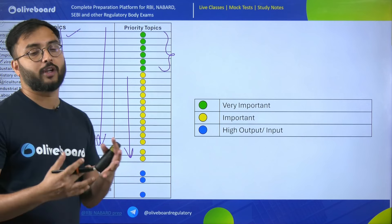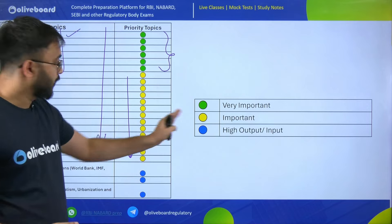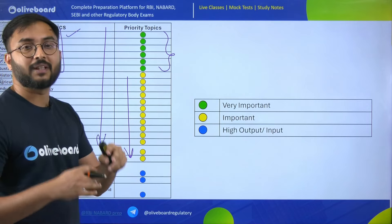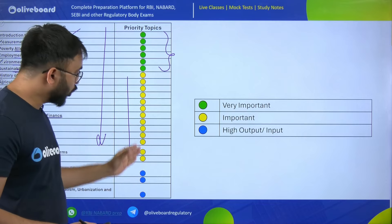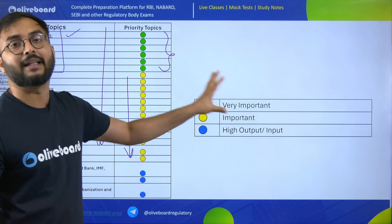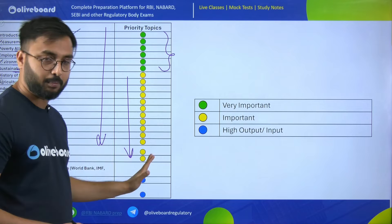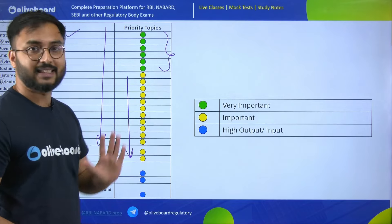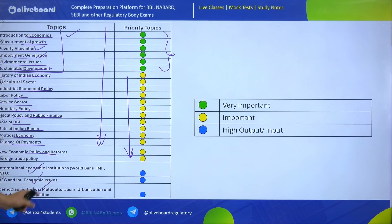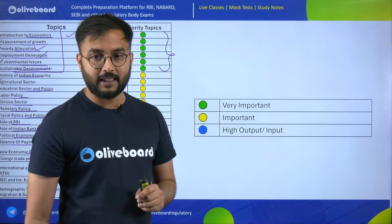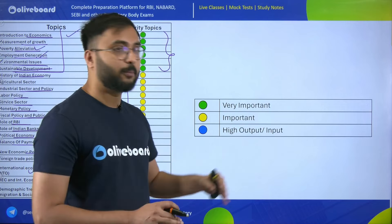So you will understand what the real priority is: prepare green first, then yellow and blue — prepare them very well. If you want to prepare all ESI topics in maybe 25 to 35 or 40 days, the first 25 days prepare all first and second priority topics — from introduction to economy through foreign trade and policy. In the last 10 days, prepare your high output-to-input topics: international economic institutions, economic issues, and demographic trends.